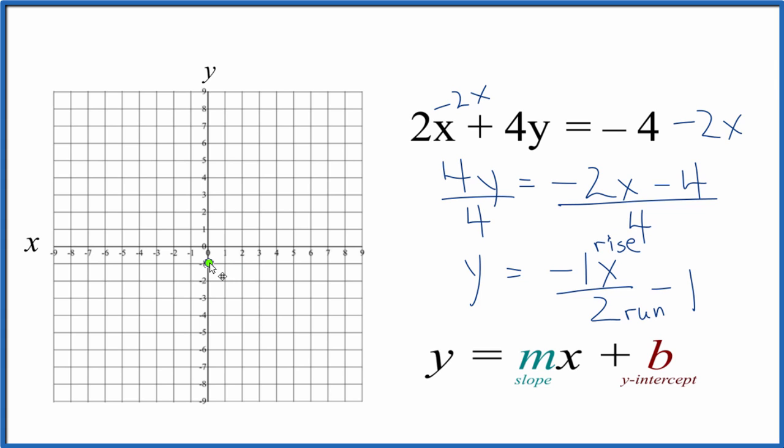So we would rise 1. If it was 1, we would rise 1 upward. But since it's negative 1, we're doing the reverse. We go down 1. And then we run 1, 2.